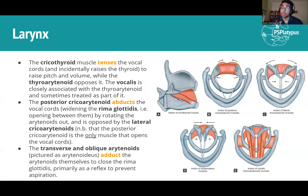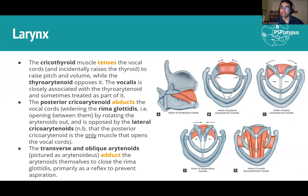For opening and closing the vocal cords, there's the posterior cricoarytenoid and the lateral cricoarytenoid. These work by rotating the arytenoid cartilages, which is where the vocal cords are attached. The posterior cricoarytenoid rotates them outwards, opening the vocal cords and widening the rima glottidis — the space through which air passes. The lateral cricoarytenoid rotates them inwards and closes the vocal cords, making the rima glottidis smaller, though not fully closing it.